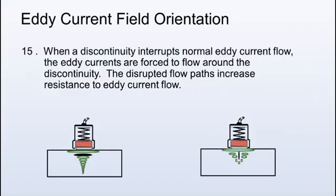When a discontinuity interrupts normal eddy current flow, the eddy currents are forced to flow around the discontinuity. The disrupted flow paths increase resistance to eddy current flow.